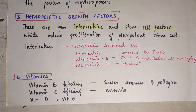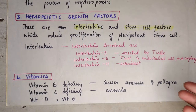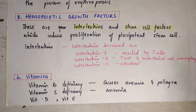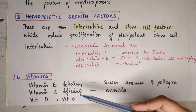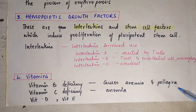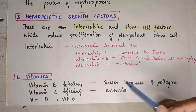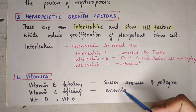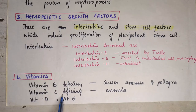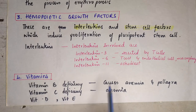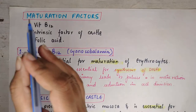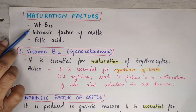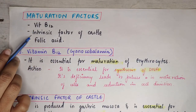The fourth general factor is vitamins, which are very important in the process of erythropoiesis. Deficiency of these vitamins causes anemia. Vitamin B deficiency, vitamin C deficiency, vitamin D deficiency, and vitamin E deficiency are all reasons for anemia.